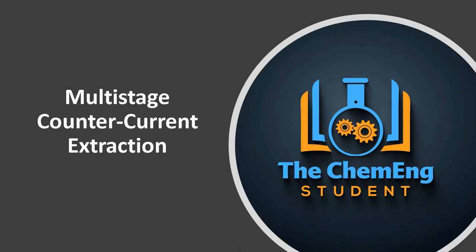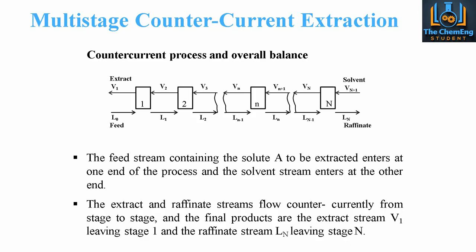In this lesson we're going to take a look at the multi-stage counter current extraction process. This is a continuation of our extraction series in our unit operations course. We'll take a look at the working mechanics and the theory behind multi-stage counter current extraction. So far in this part of the course we've looked at the single stage equilibrium extraction and the single stage liquid-liquid extraction. Now what we're going to do is take a more realistic approach and have multiple stages of extraction.